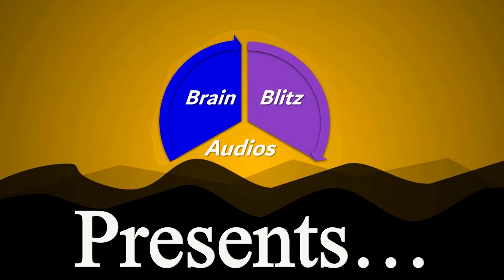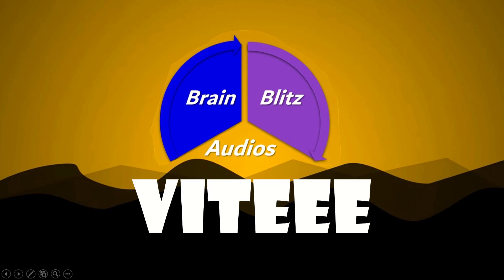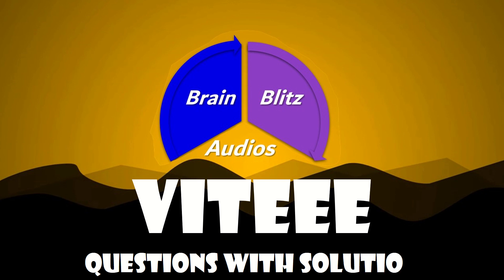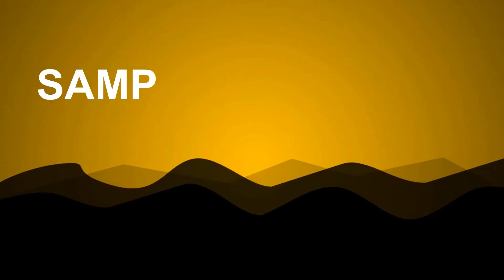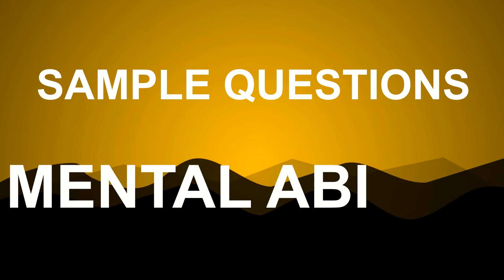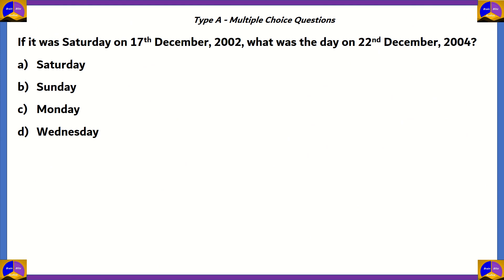Hello everyone and welcome to Brain Blitz Audios. Today we'll be dealing with the VITEEE examination and we'll be dealing with the mental ability segment of it. Let's begin with the first question: if it was Saturday on 17th December 2002, what was the day on 22nd December 2004?